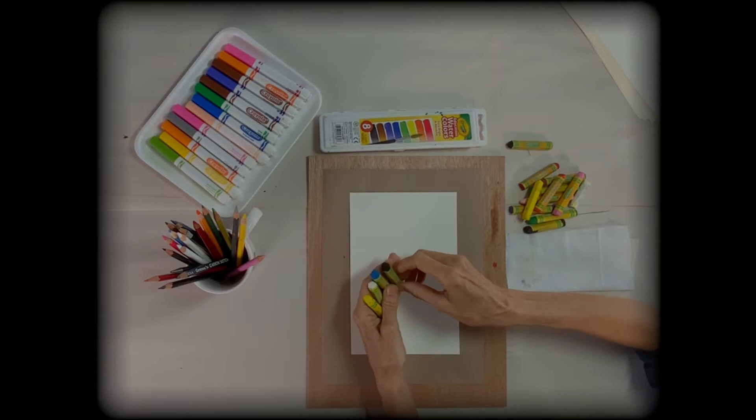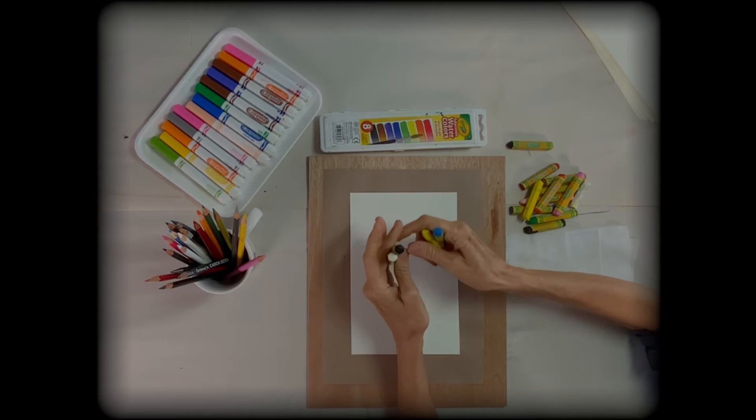You could use watercolors, markers, even colored pencils. Now horses, their vision, they see things in blues, yellows, and grays.